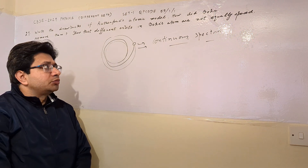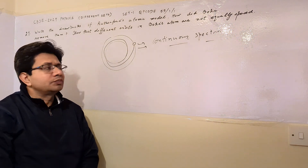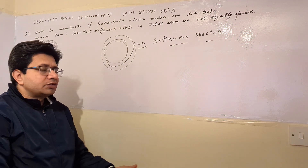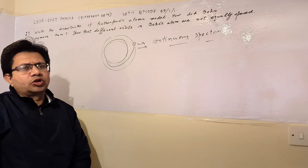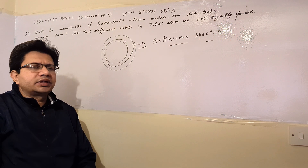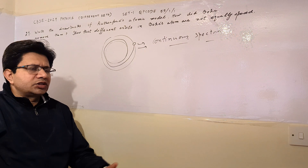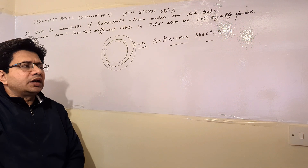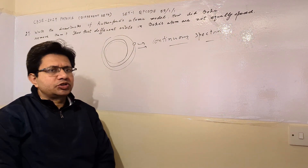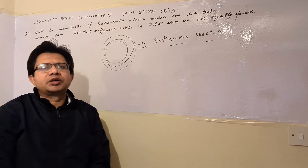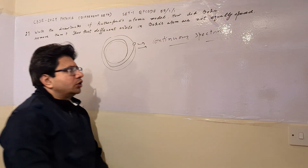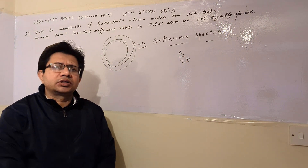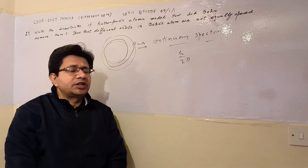Bohr removed these drawbacks through his postulates. According to Bohr, there are certain stable orbits in which electrons revolve and in these stable orbits electrons do not radiate any energy. For these stable orbits, the angular momentum of the charge carrier is an integral multiple of h upon 2π — that is, mvr = nh/2π.